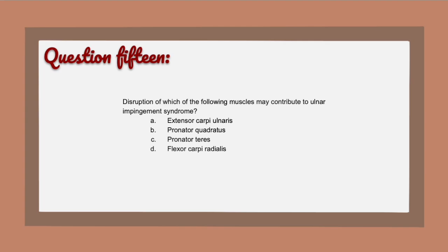Question 15: The correct answer is B — pronator quadratus. It contributes to ulnar impingement syndrome because it can accentuate distal ulna instability. Normally the pronator quadratus functions to pull the radius and ulna together, but contraction of the pronator quadratus can actually cause the ulna to impinge on the radius, sometimes resulting in painful snapping.